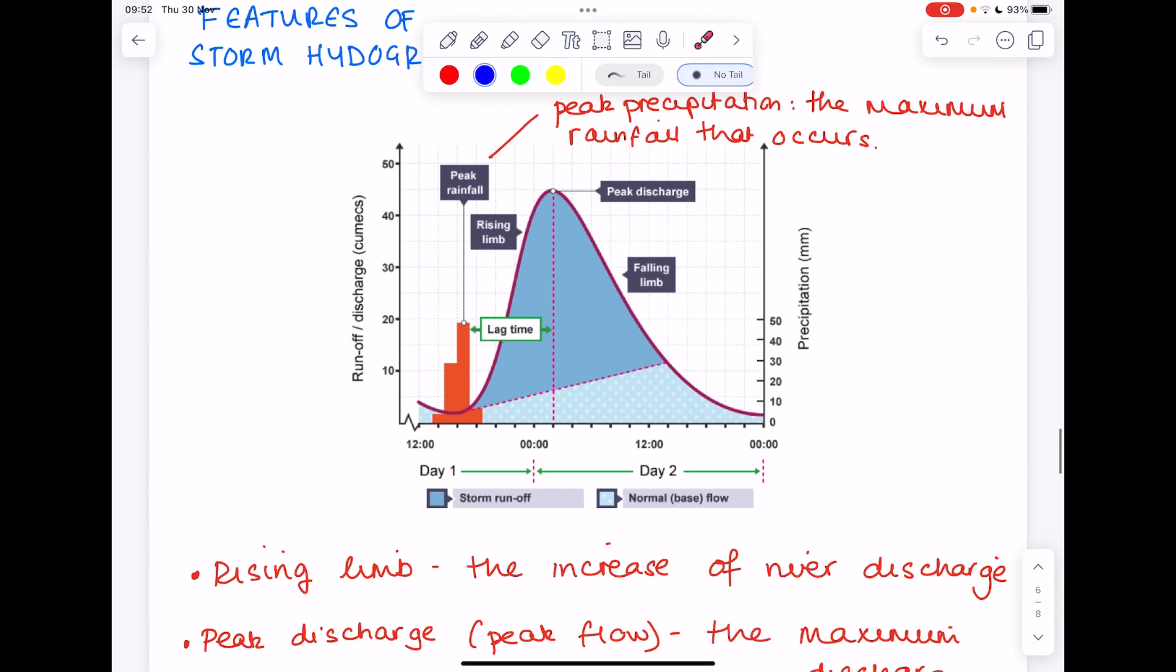So we've dealt with peak rainfall, rising limb, lag time, peak discharge, but what about this falling limb? We can see that negative gradient of the graph line. This is known as the falling limb, and what it's trying to say is that as that storm precipitation levels decrease, in turn river discharge will decrease because less water will be entering the rivers.